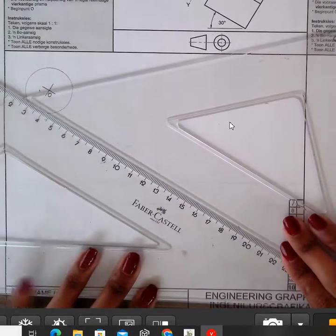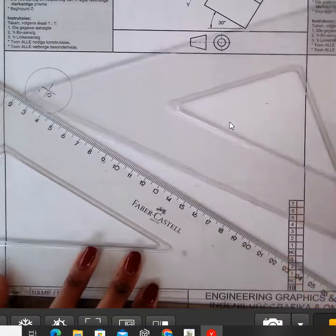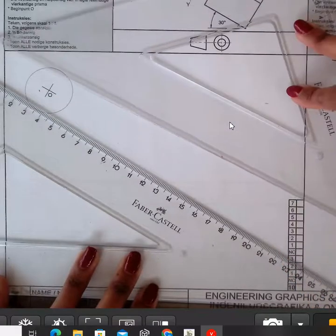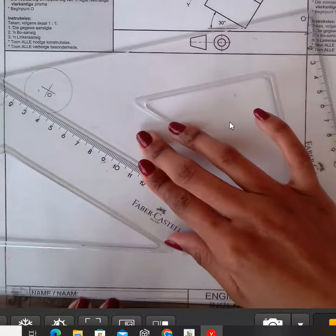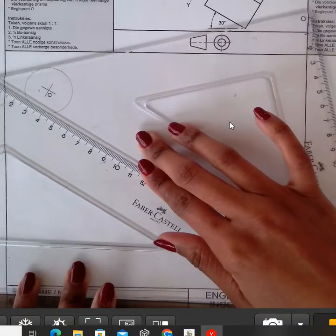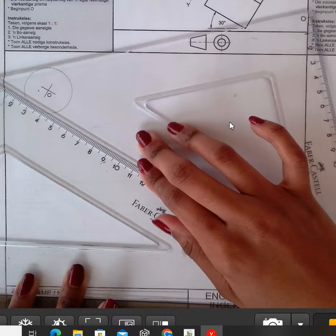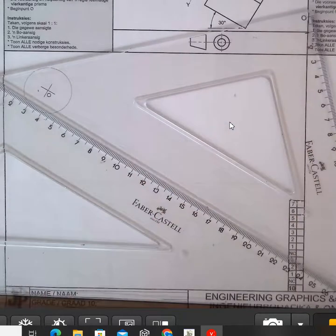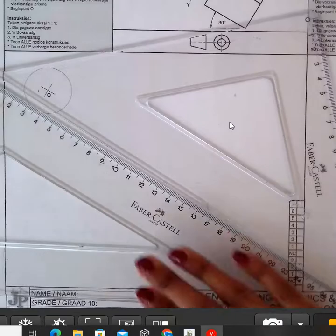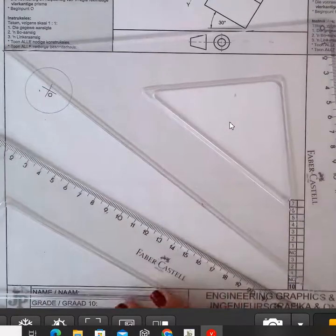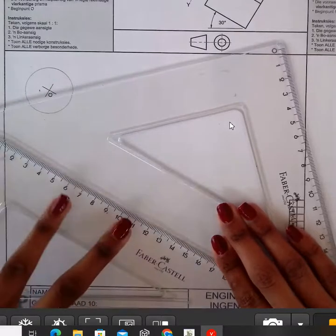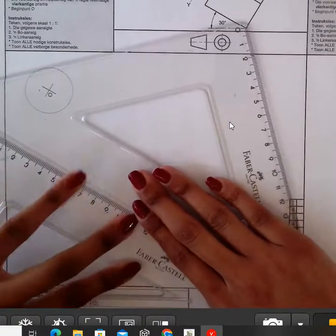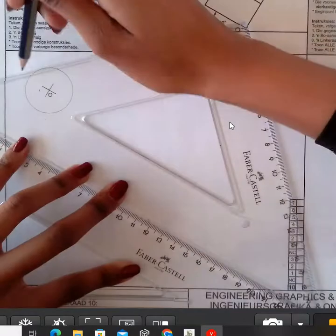So at any point, you should ensure that you do not move it around. It only has to move up and down, and I'm referring to the 45 degree set square. And then for your 30 degree set square, you must ensure that it doesn't move at all. So when I start drawing, I must ensure that it's sitting in a position that will not allow it to disturb when I'm drawing.